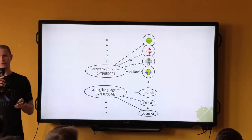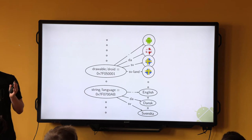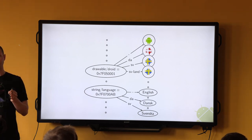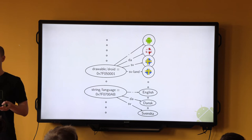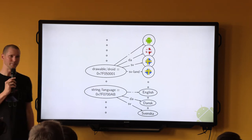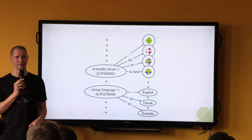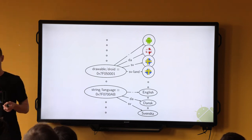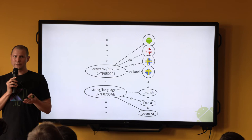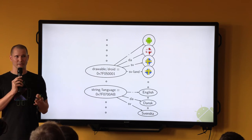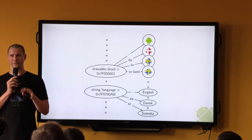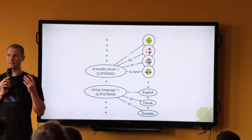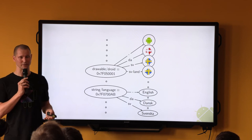This is the real beauty of resources: the same key will map to different values based on parameters outside your running application. You're all familiar with how you can provide translations for applications, or layouts for different orientations. You do so by placing the resource values in folders with special suffixes, like 'values-sv' for Swedish resources.